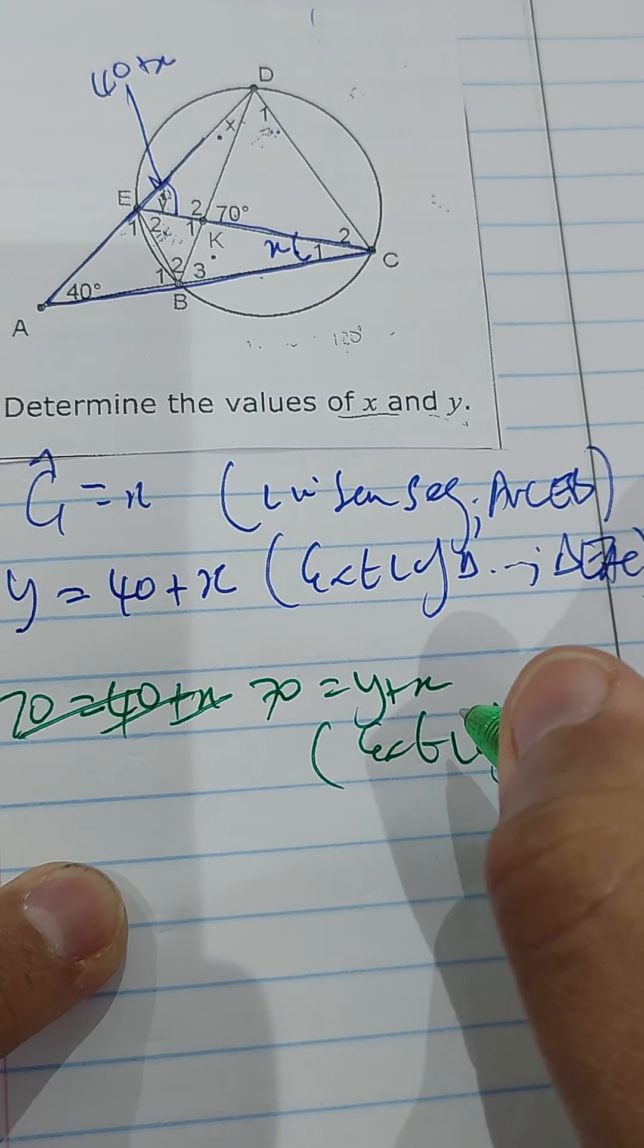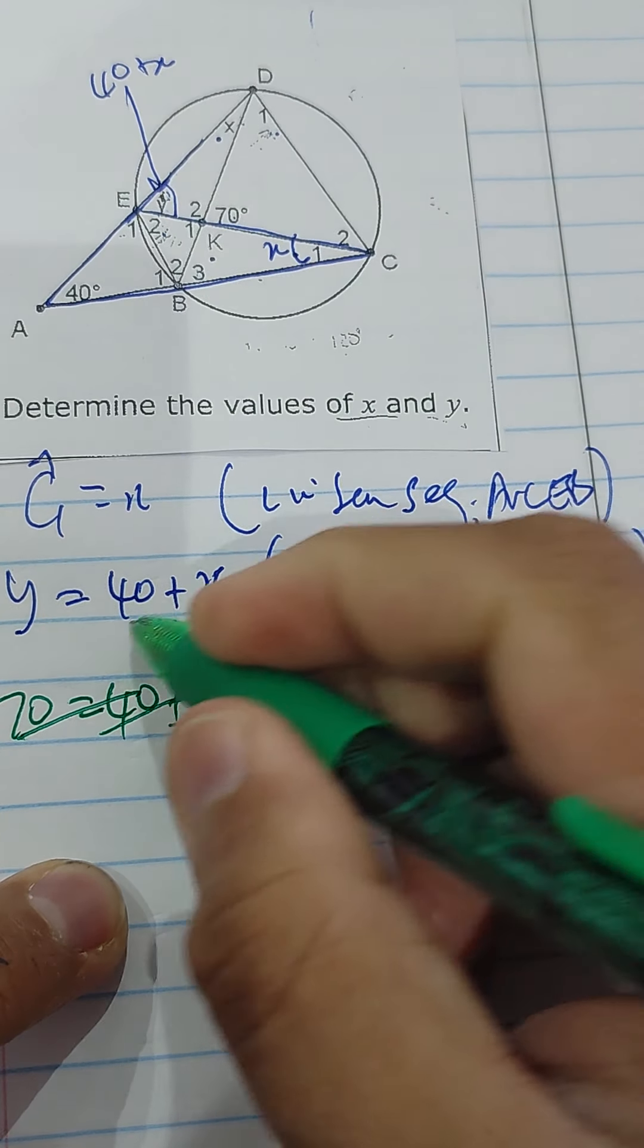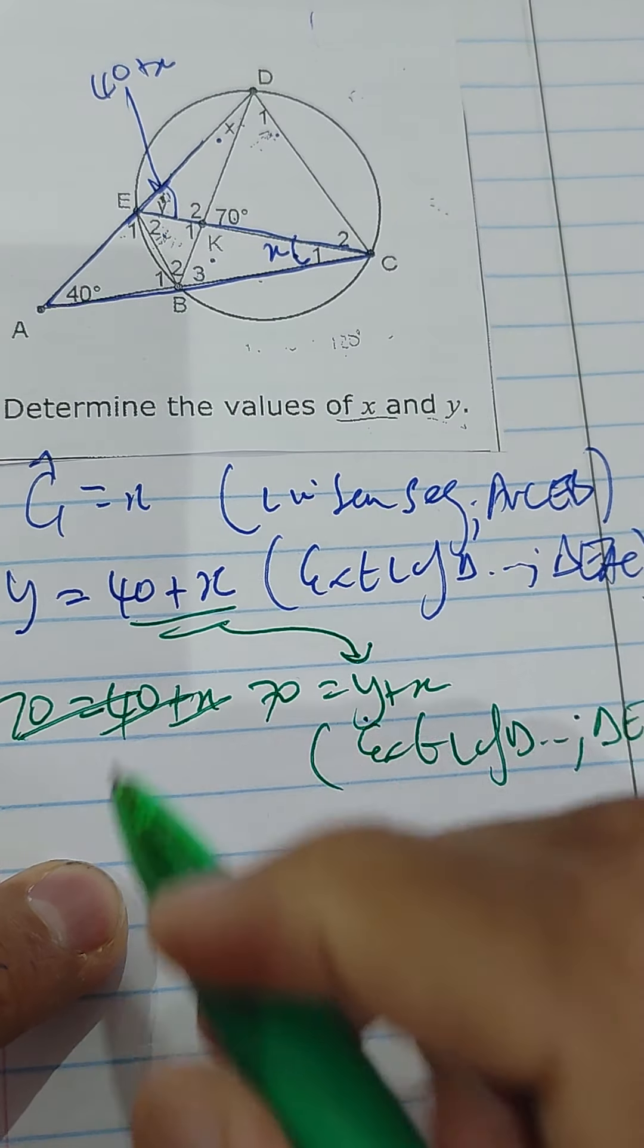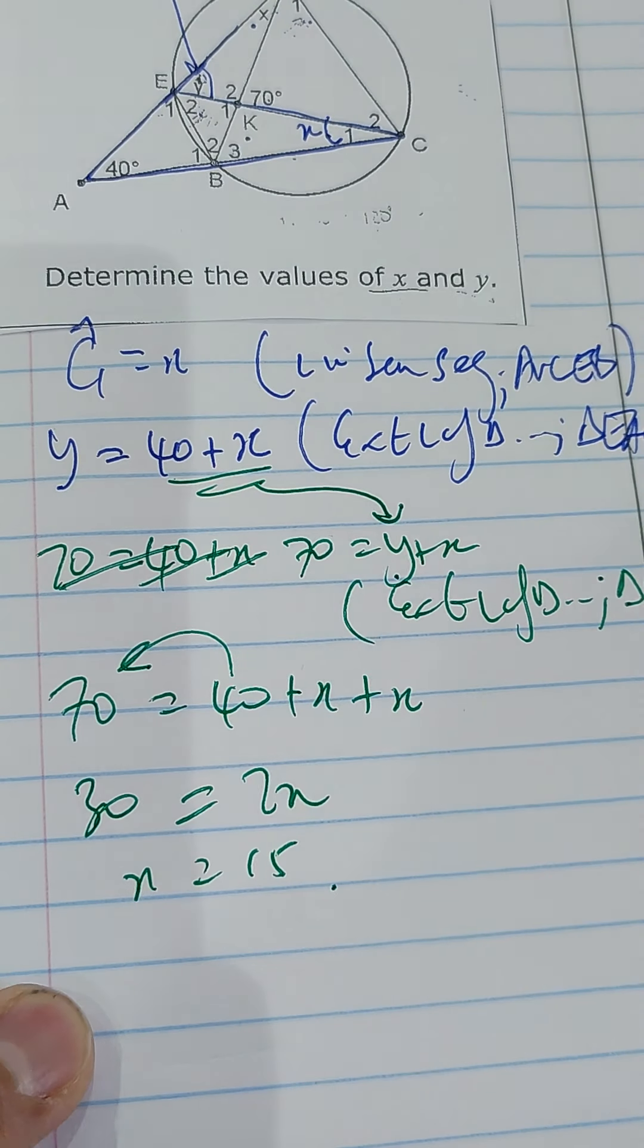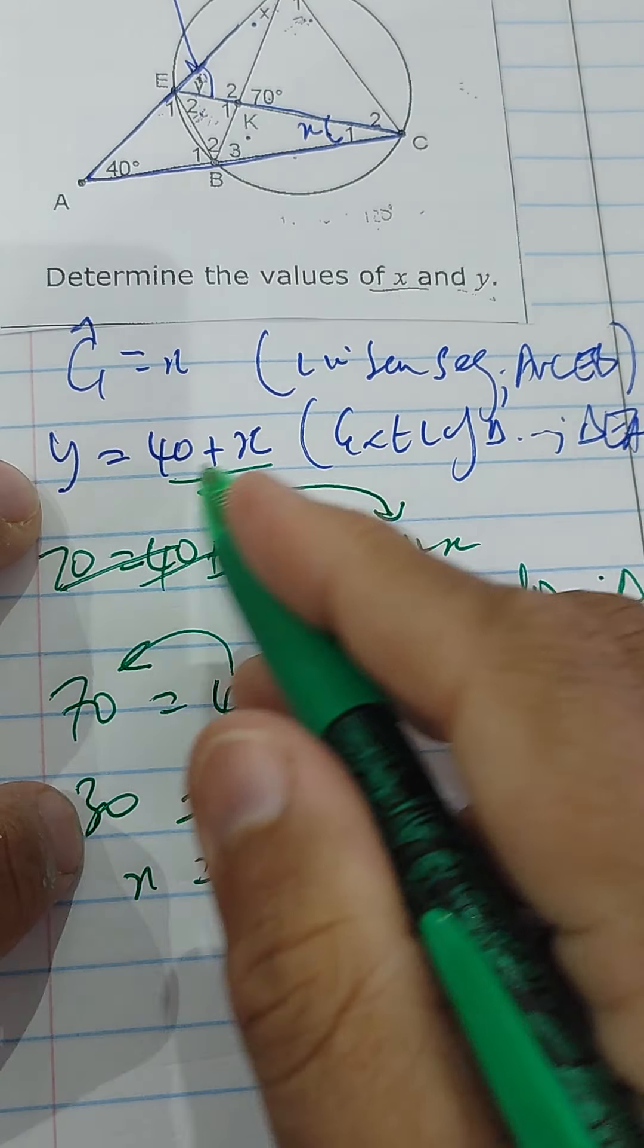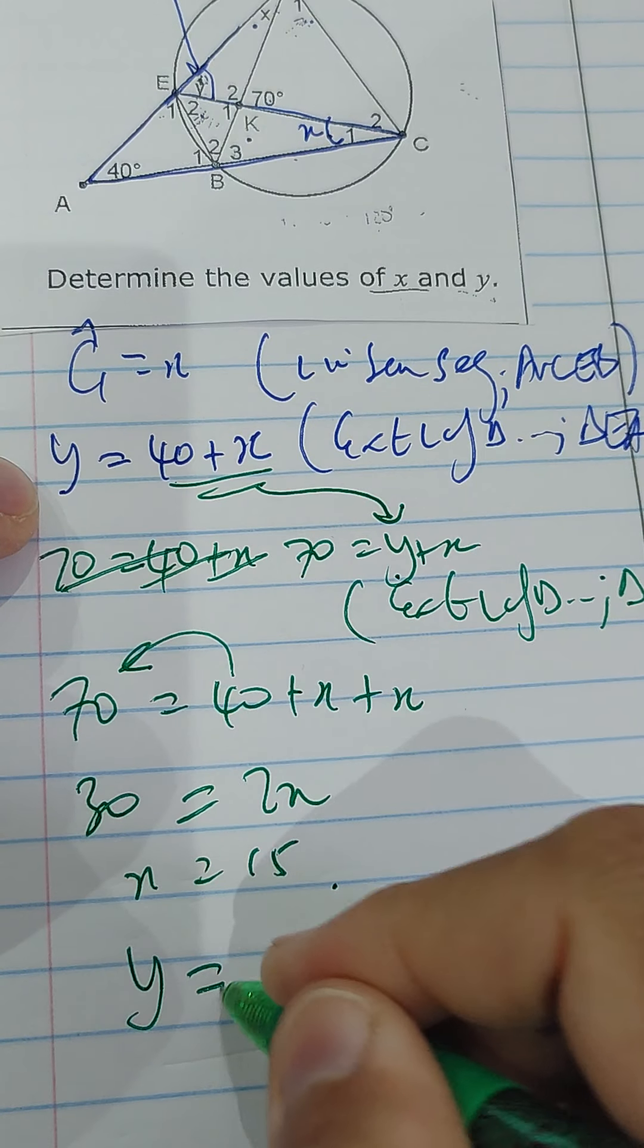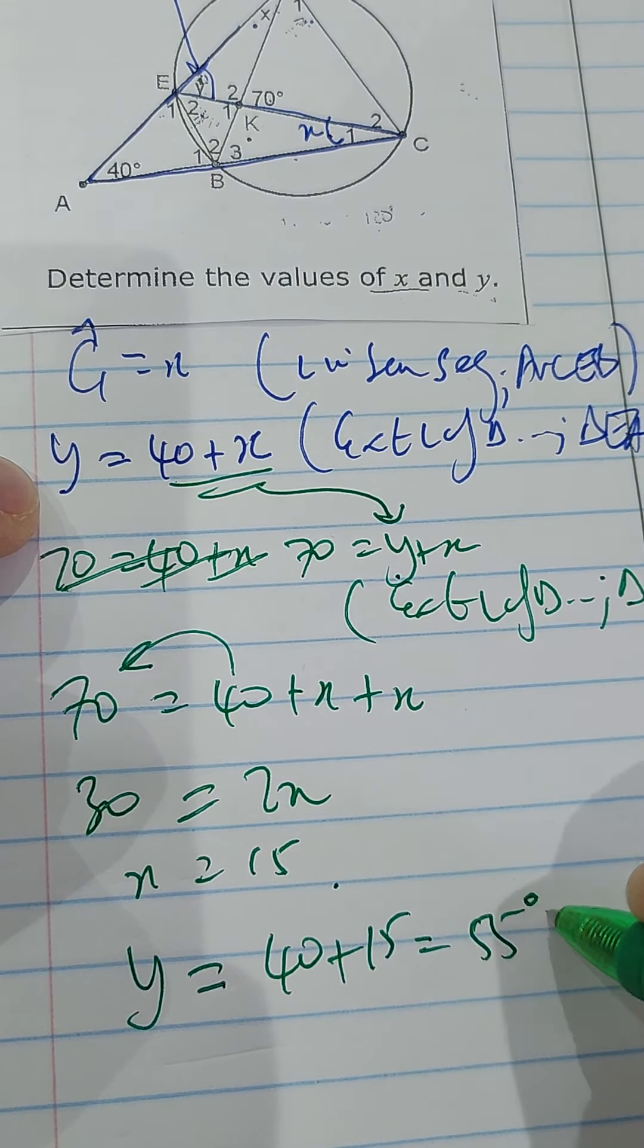Remember, y is now 40 plus x, so I can replace that y. So 70 is equal to 40 plus x plus x. So I get 2x is equal to 30 degrees, so x is 15. What do I say? Since y is equal to 40 plus 15, y is equal to 55 degrees.